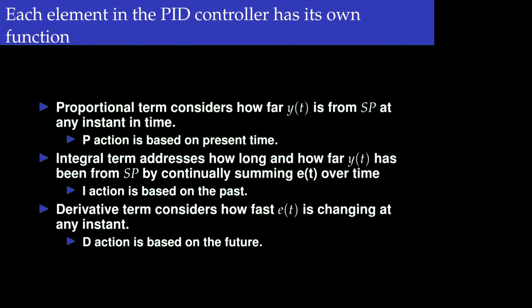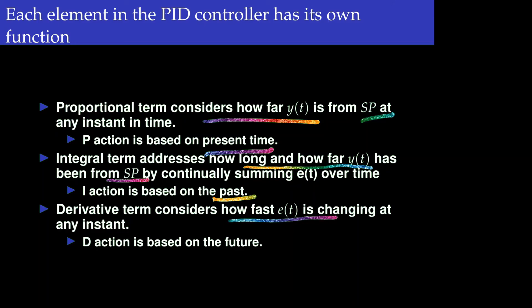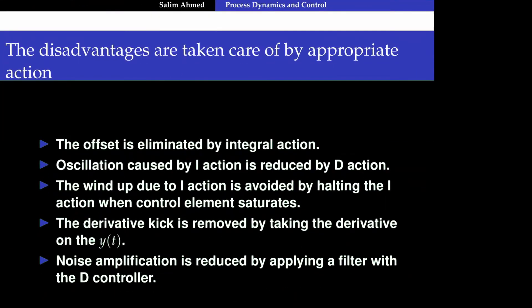Each of the three control elements has its own function. The proportional controller considers how far y(t) is from the set point at any current time — P control is based on the present error. Integral control considers how long and how far y(t) has been from the set point — it is based on the past. Derivative control considers how fast the error is changing — it is looking at the future. So the P, I, and D elements look at the present, past, and future respectively.